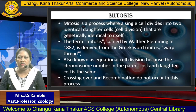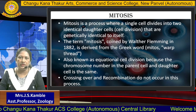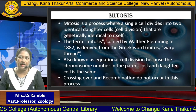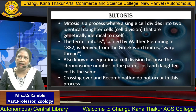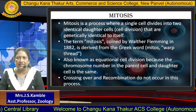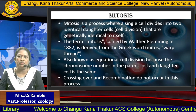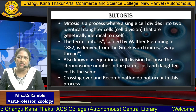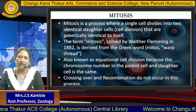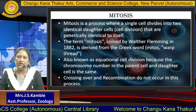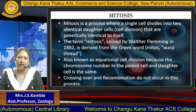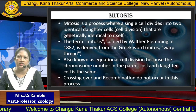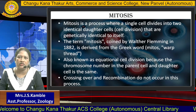Before going to learn about the concept of mitosis, we should know the definition of mitosis. Mitosis is a process where a single cell divides into two identical daughter cells that are genetically identical to itself — meaning whatever cellular material is equally divided into the two daughter cells. The term mitosis is derived from the Greek word 'mitos', meaning 'wrap the thread'. The term mitosis was coined by Walther Fleming in 1882. It is also known as Equational Cell Division, because the chromosome number in the parent cell and daughter cell is the same.